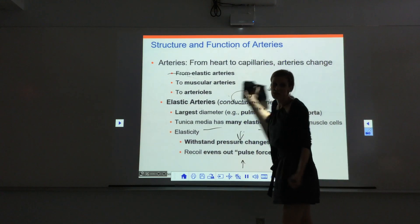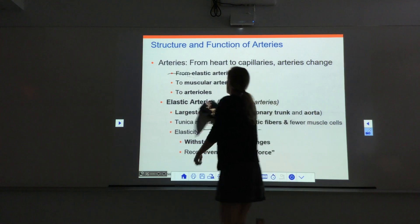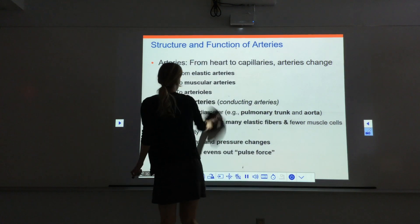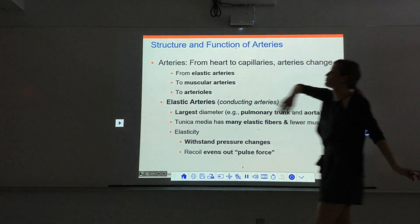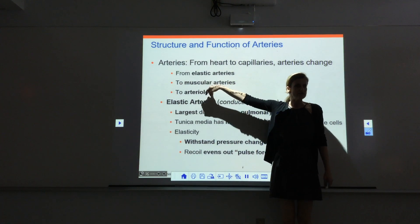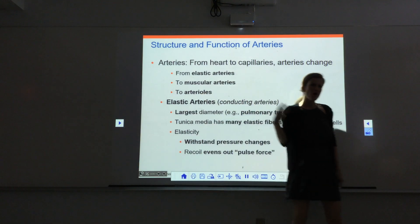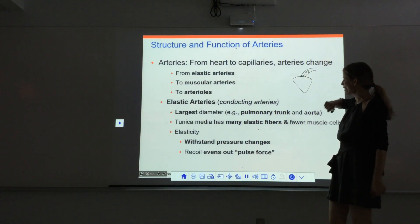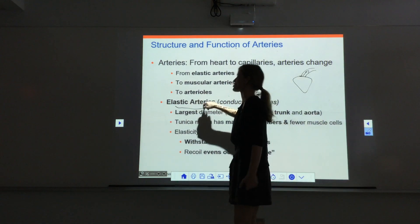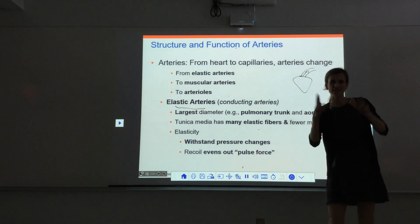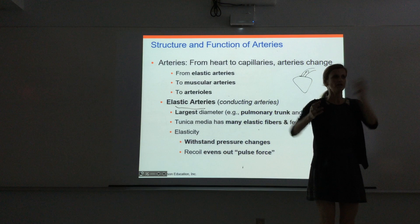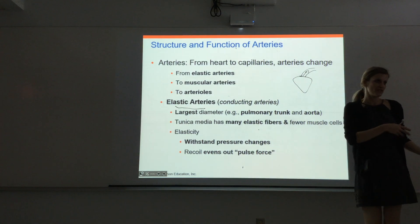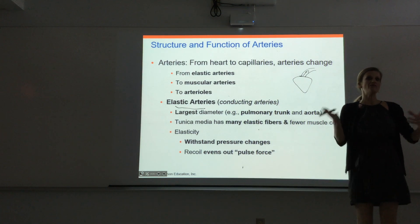All arteries are not the same — we have different types. Arteries progress from elastic arteries to muscular arteries to arterioles, which are the smallest arteries. The initial arteries that take blood away from the heart are called elastic arteries, or sometimes conducting arteries, because they conduct large volumes of blood to different regions.